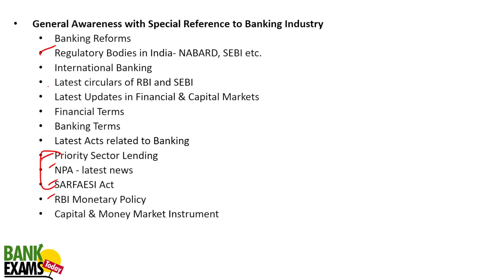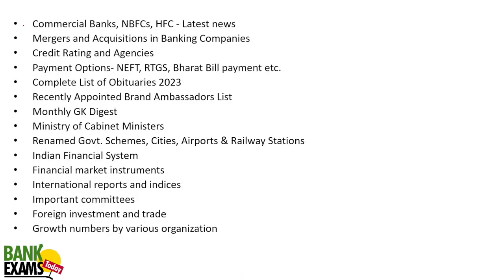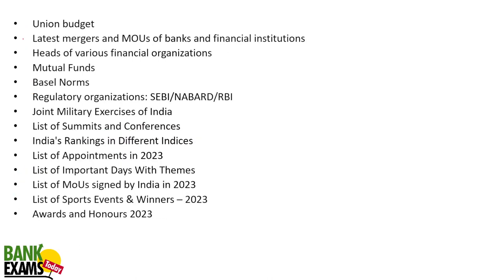General Awareness also covers banking reforms, regulatory bodies, priority sector lending, NPA, monetary policy, latest RBI circulars, financial and banking terms, commercial bank mergers and acquisitions, credit rating agencies, payment options, latest obituaries, appointments, cabinet ministries, latest government schemes, the Indian financial system, financial market instruments, international reports and indices, COI committee, foreign investment and trade, growth numbers by various organizations, union budgets, latest mergers and MOUs of banks, heads of financial organizations, mutual funds, Basel norms, SEBI, NABARD, RBI, joint military exercises, summits, conferences, India's rank in indices, appointments, important days, MOUs, sports events, and awards and honors.